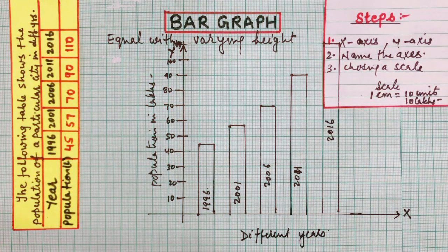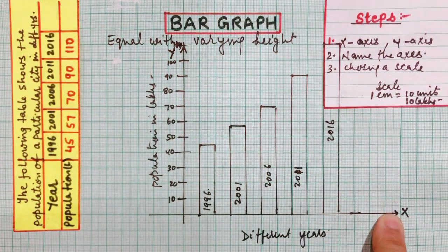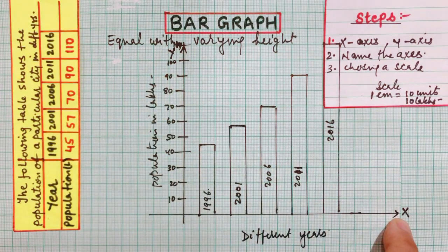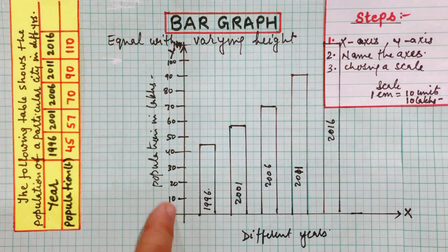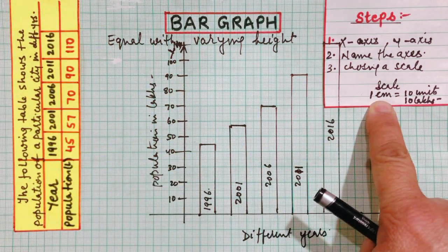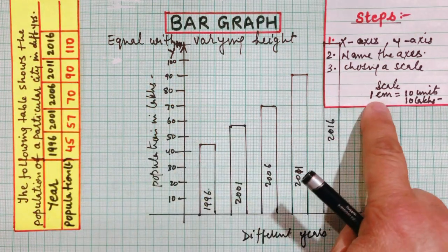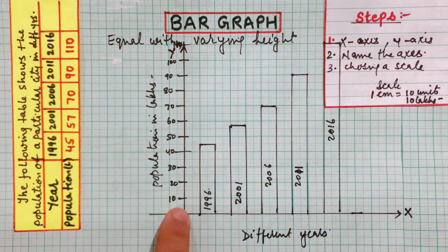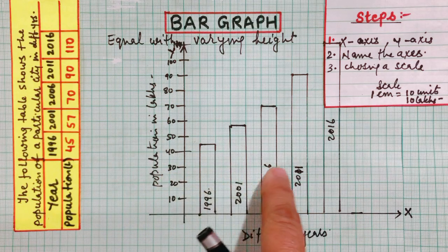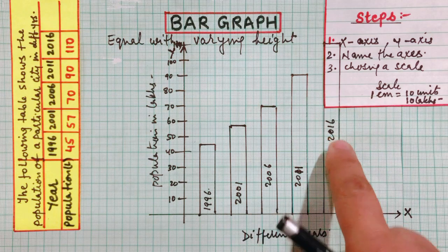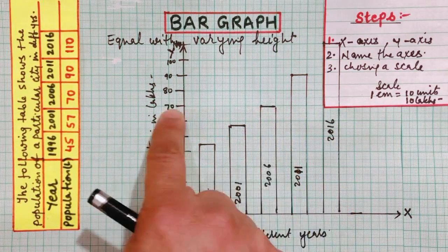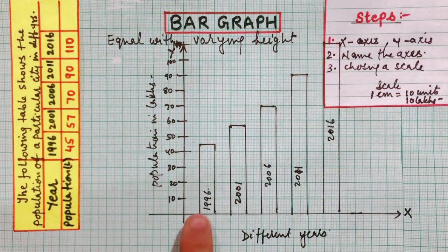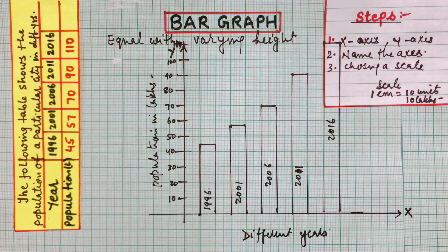So what did we find? This is a simple bar graph. The x-axis is marked with X and y-axis with Y, both with arrows. Second, you name the axes: different years on x-axis and population data on y-axis. Third, you choose a scale — one centimeter equal to 10 lakhs — and draw all the rectangular bars showing different years with different populations. You can clearly see that the population is increasing. I hope this video helps you.